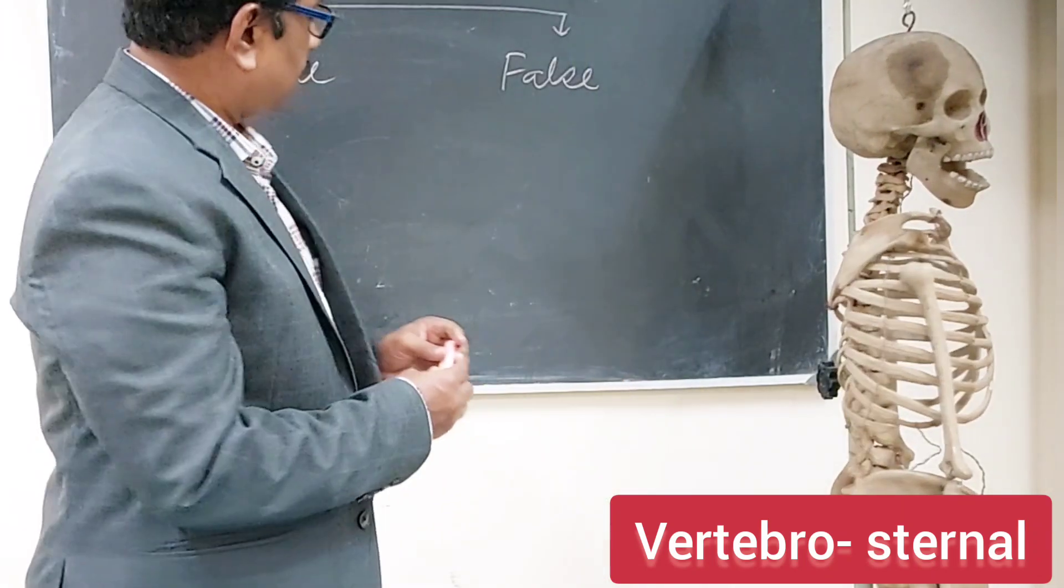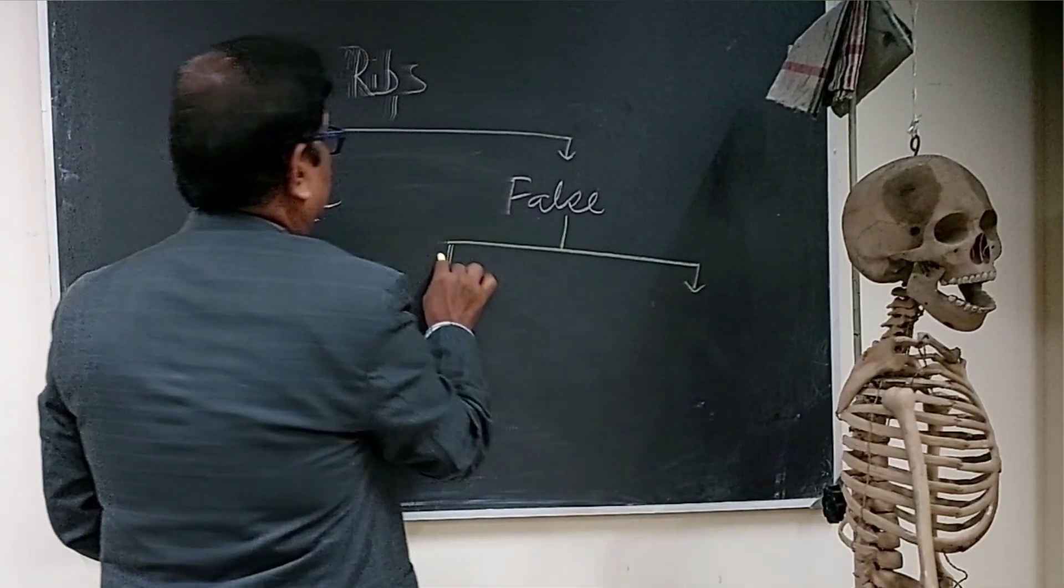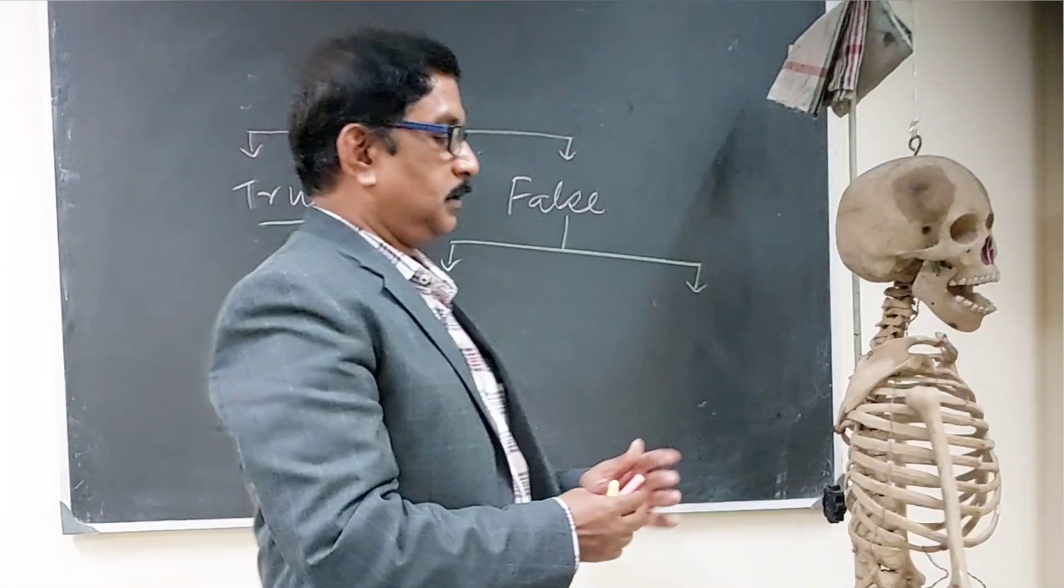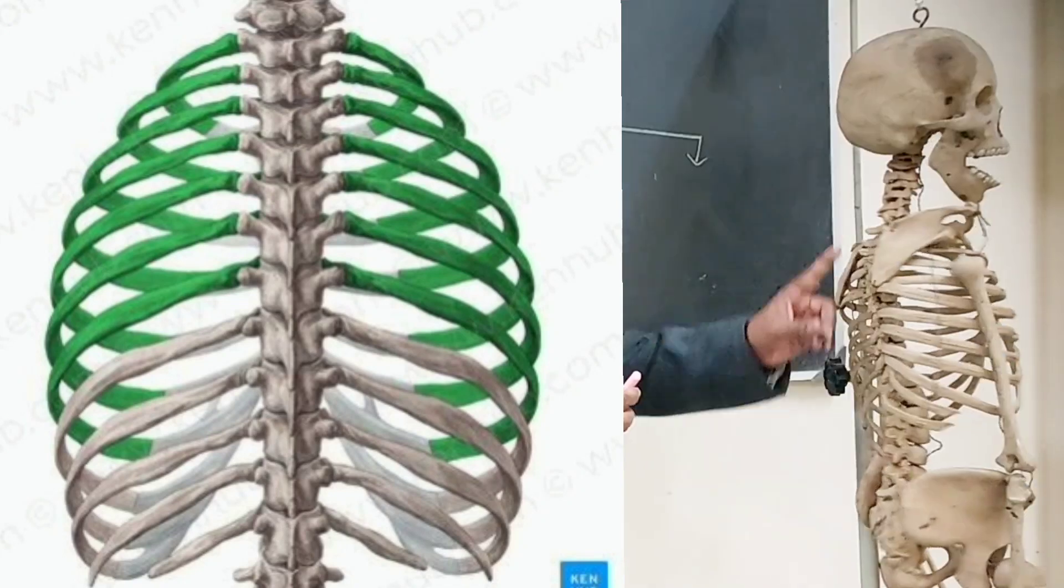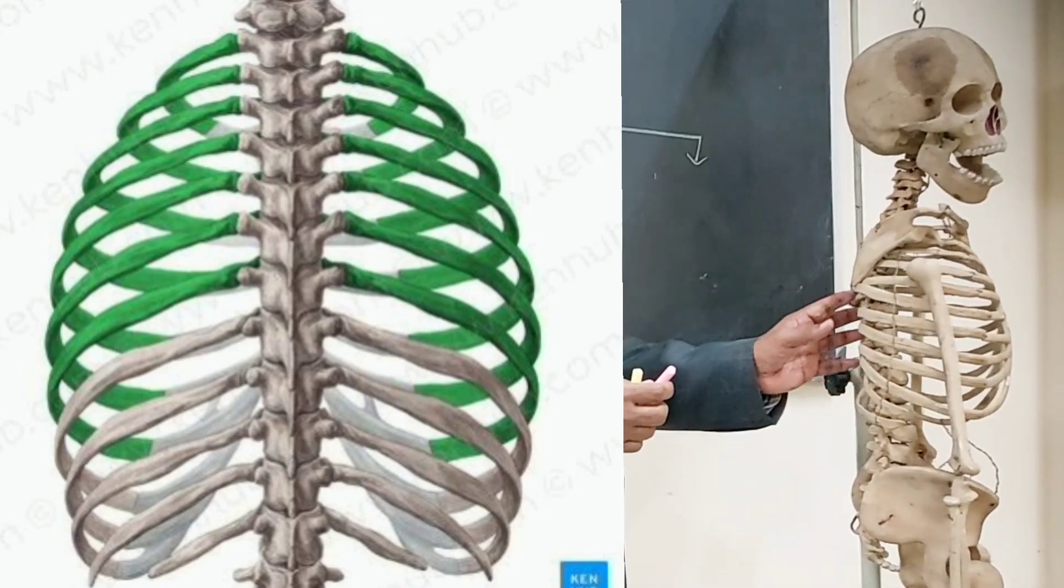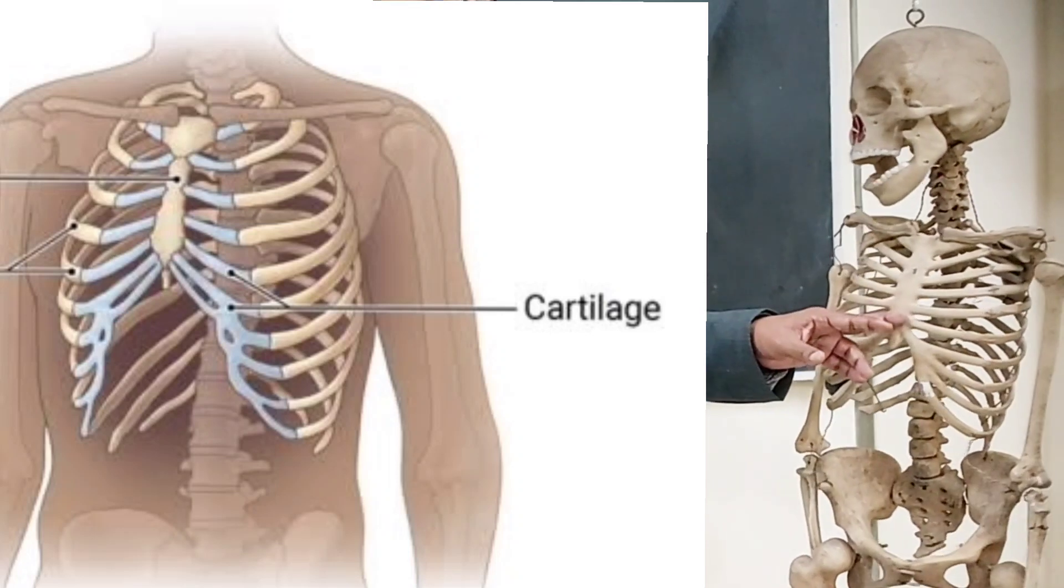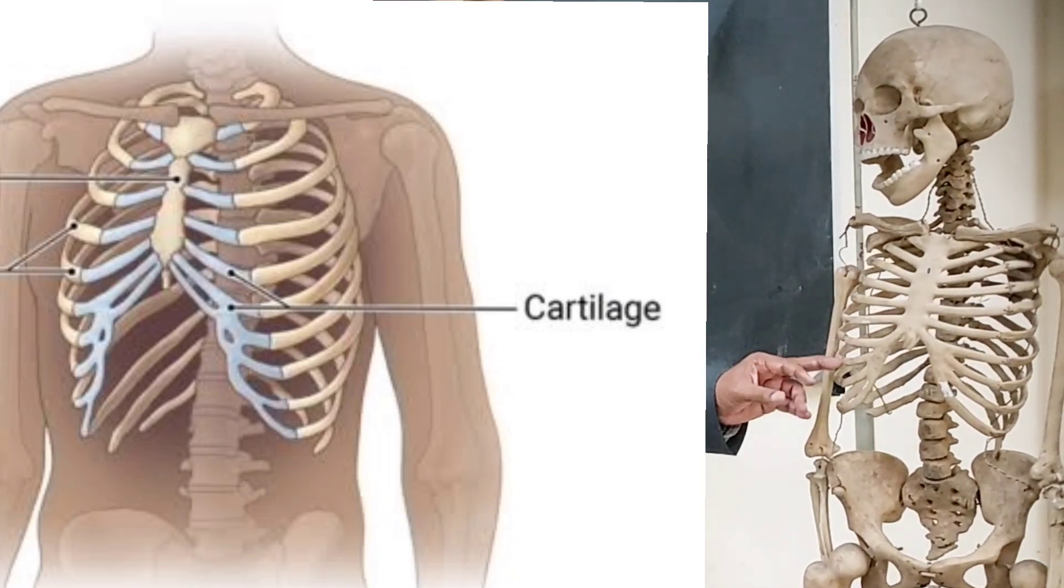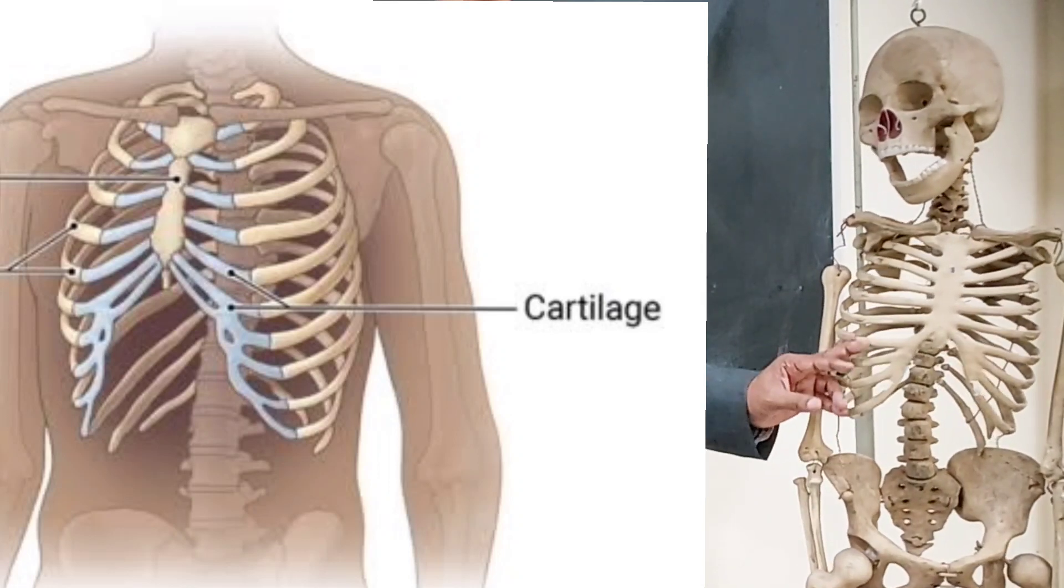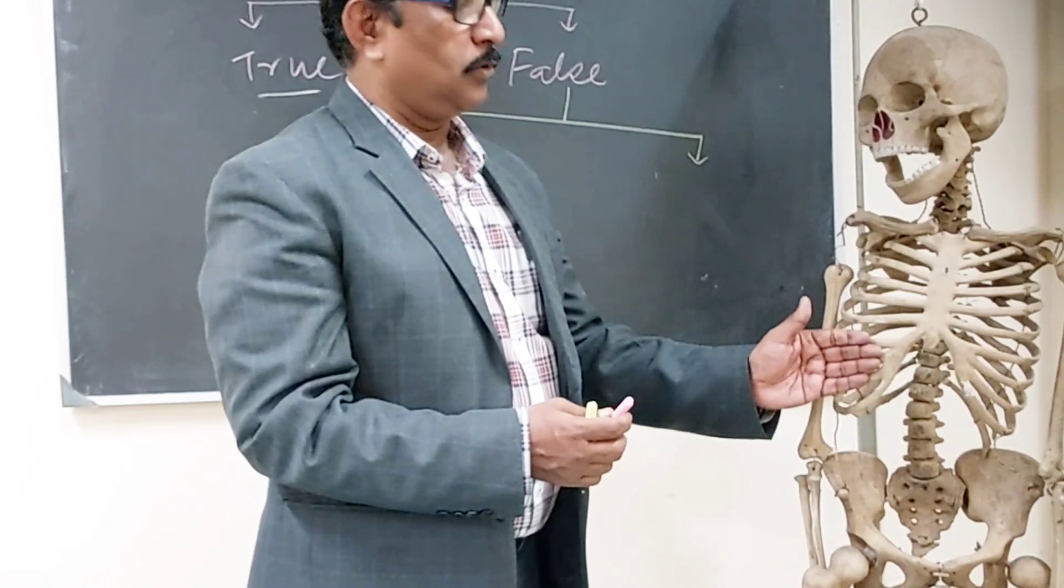Those ribs are called true ribs. And among the false ribs, all the ribs articulate with the vertebra from 1 to 12. But anteriorly, some ribs do not articulate directly with the sternum. Rather they articulate with the costal cartilage. So they are called vertebrochondral.